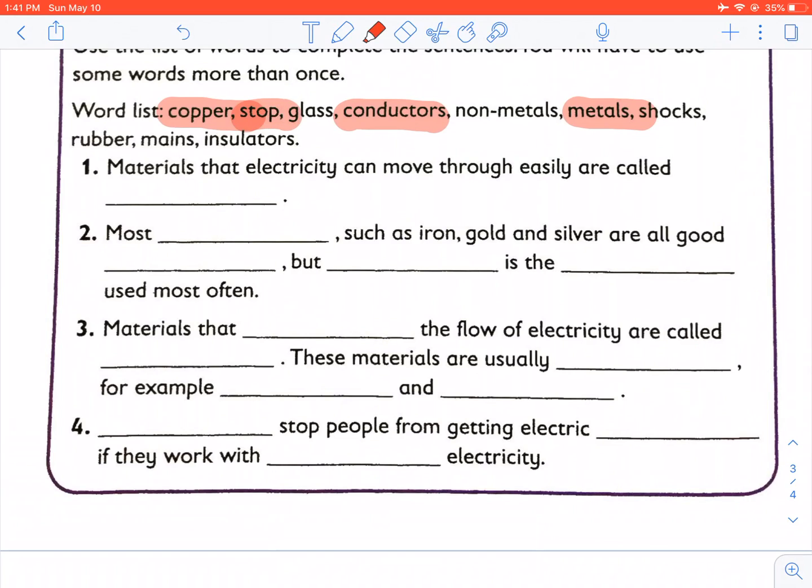Materials that do not conduct electricity are called insulators. These materials are usually non-metals, for example, glass and rubber.